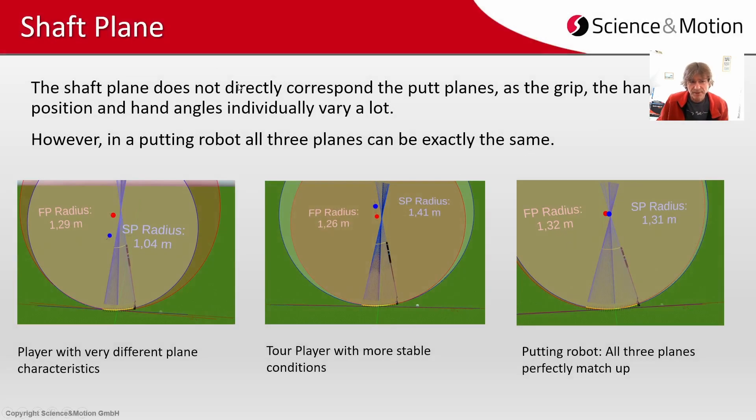As said the shaft plane does not directly correspond to putt planes as grip, hand position and hand angles can individually vary a lot and can influence the shaft plane. However in a putting robot these planes can also be exactly the same. For a putting robot the radius and the pivot and the center of the planes can be exactly the same.